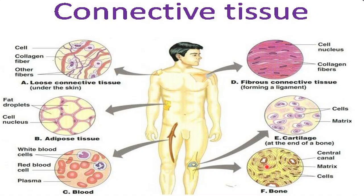Bones are the last type of specialized connective tissue. Bones also have a hard matrix upon which cells are embedded, and the cells are called osteocytes. Bones provide support and the structural framework of the body. Inside some bones is a soft tissue called bone marrow, which is also part of connective tissue and helps in formation of blood cells — showing that bones and blood are related.